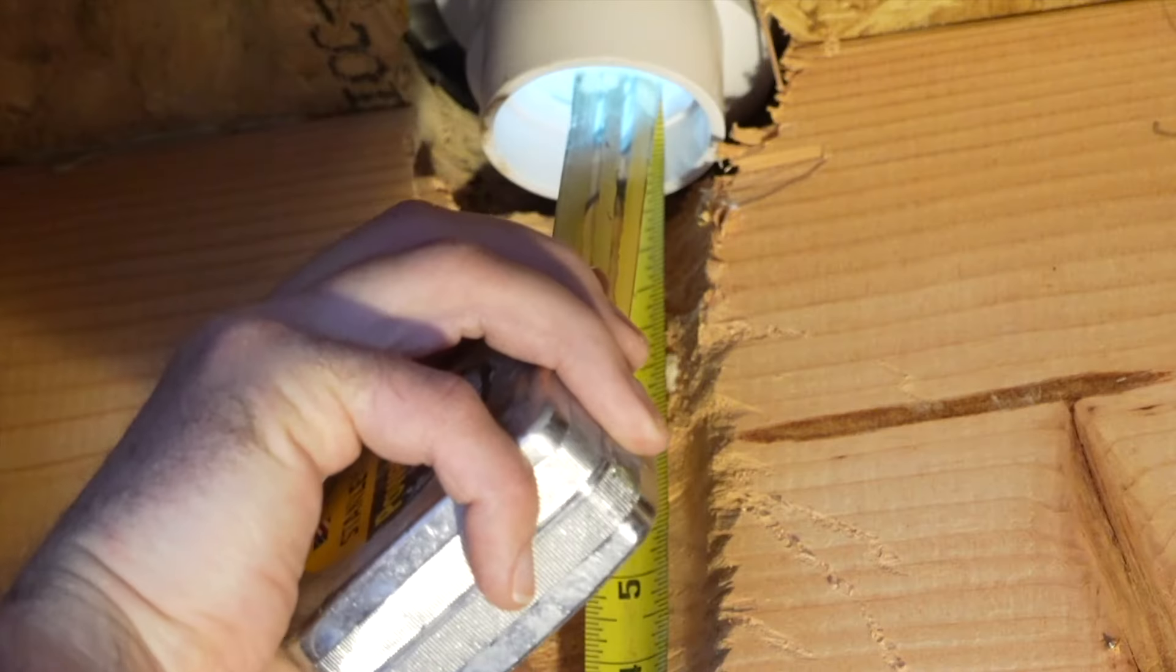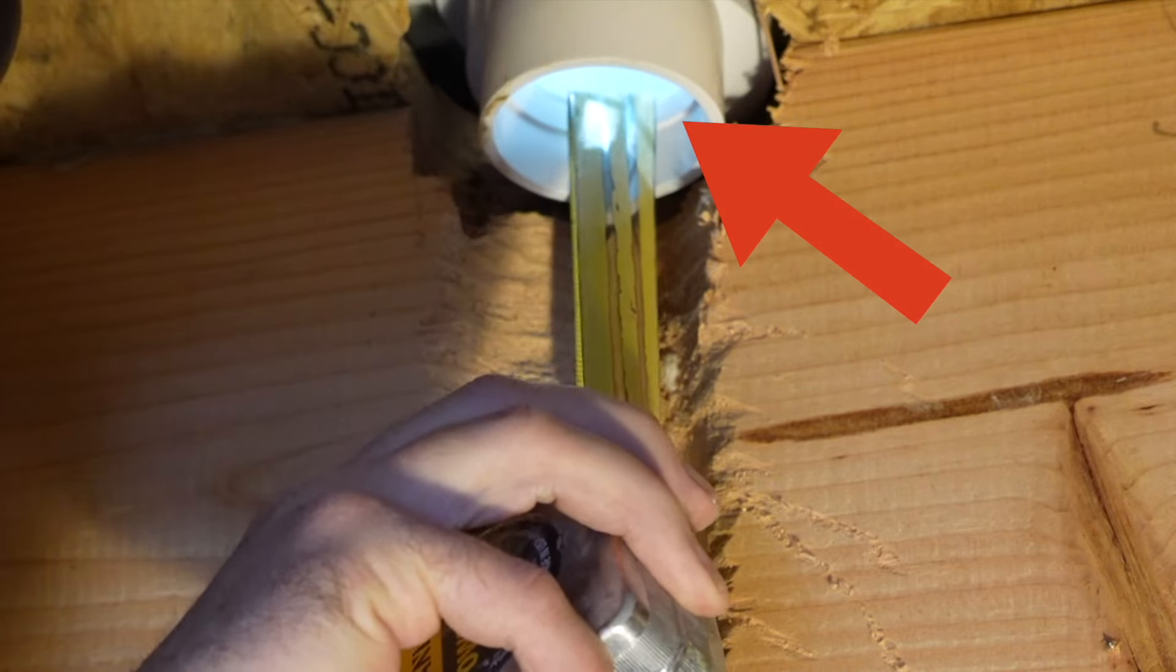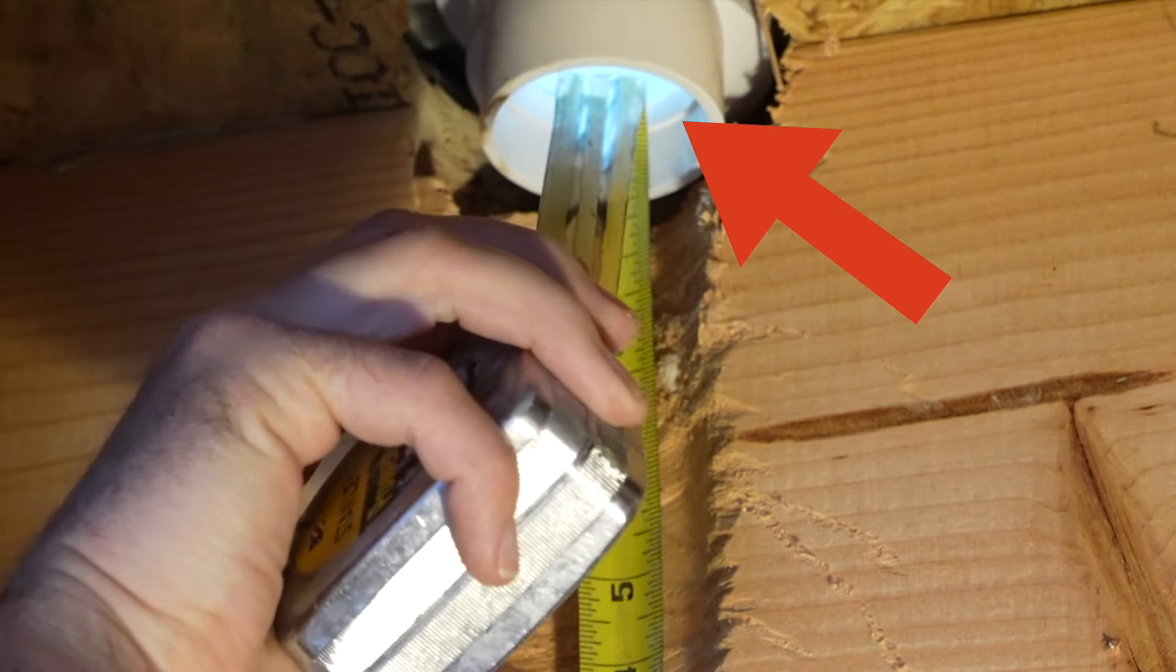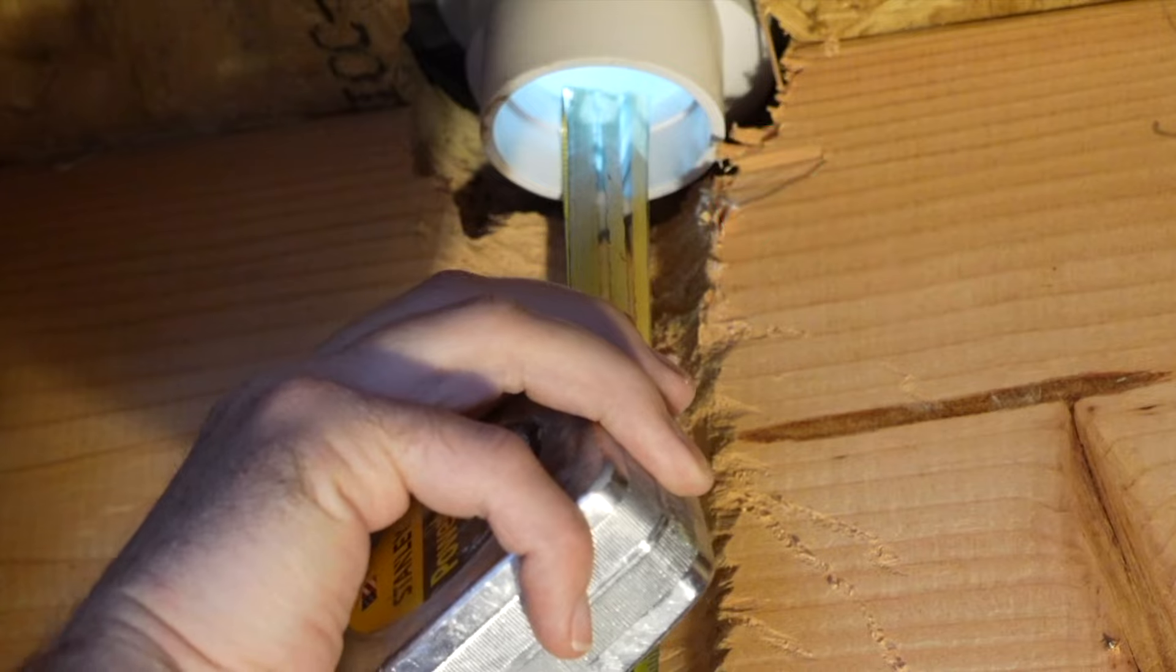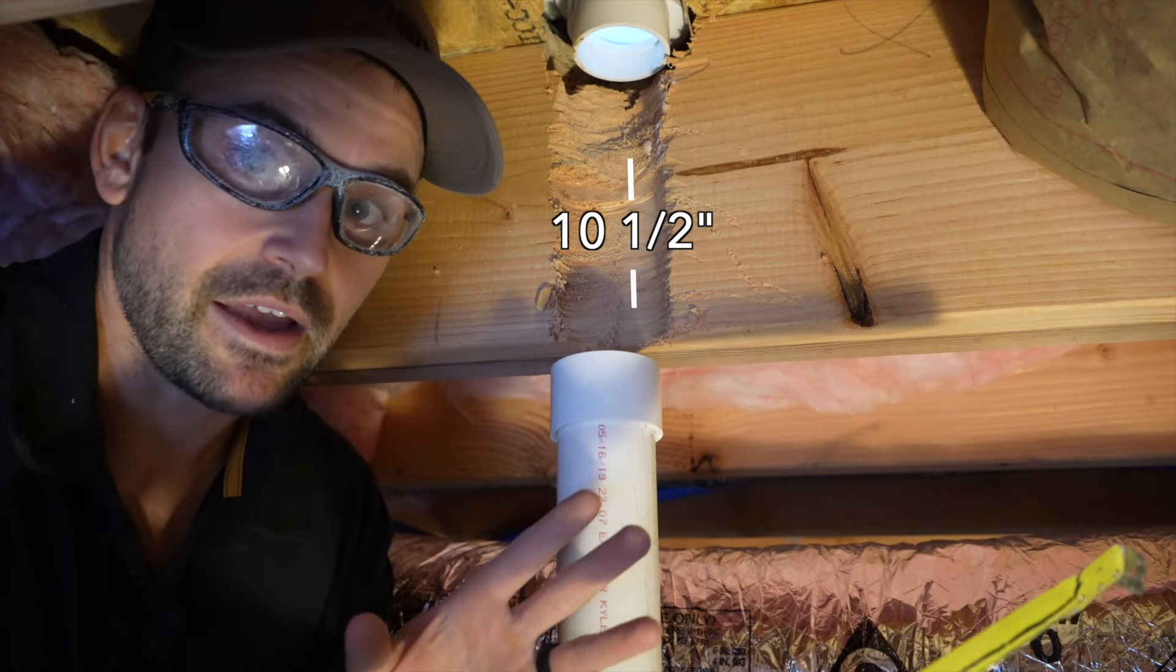I'm going to measure up into the drain to where it's going to go as well. From the inside of this collar to the inside of that drain I got 10 and a half inches. So I need to cut a pipe 10 and a half inches.